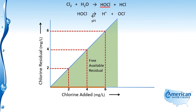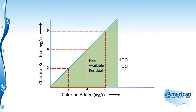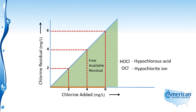This residual is a free chlorine residual made up of hypochlorous acid and the hypochlorite ion depending upon the pH. So depending upon the pH, there will either be more hypochlorous acid or more hypochlorite.